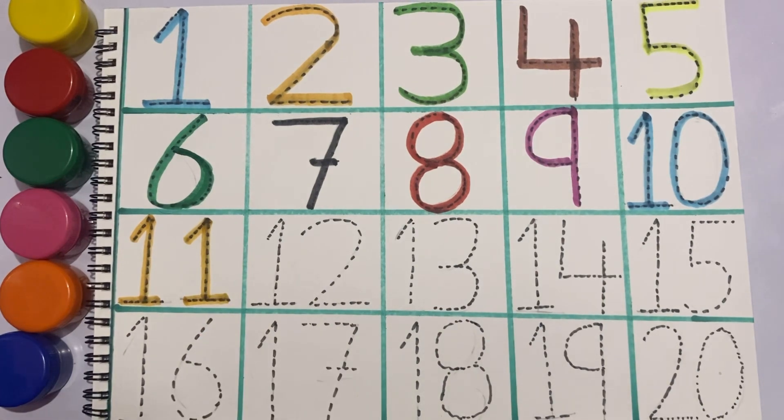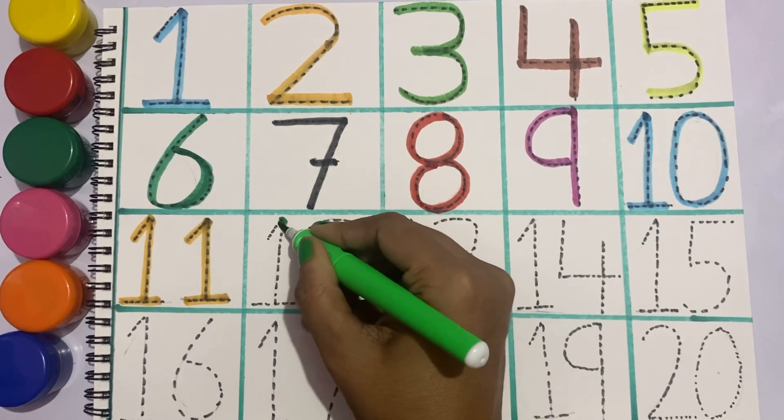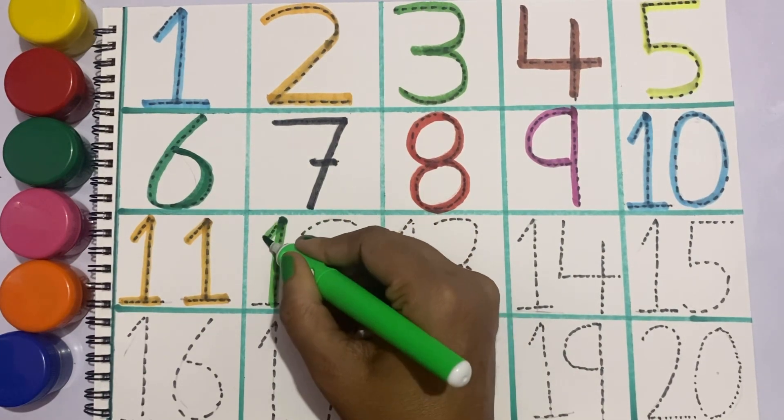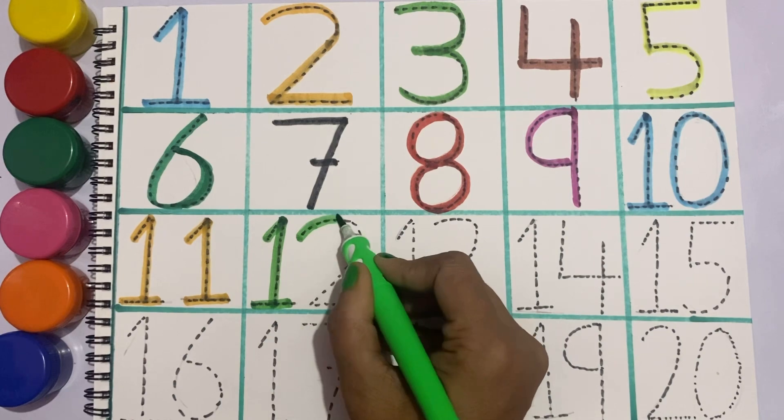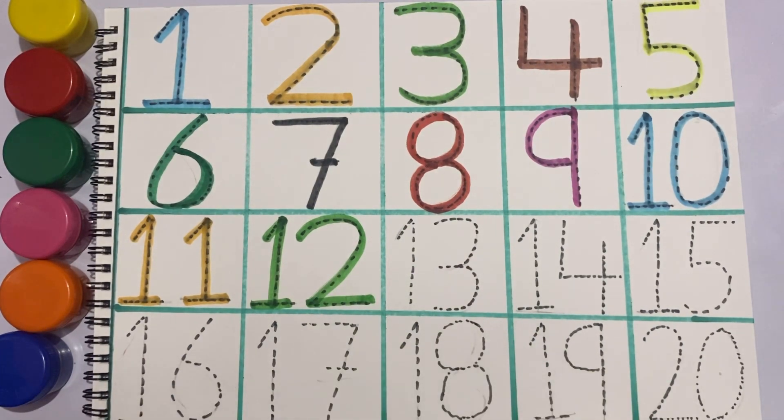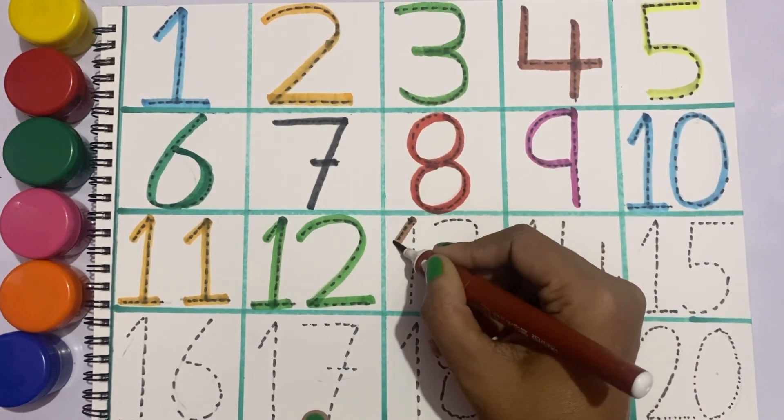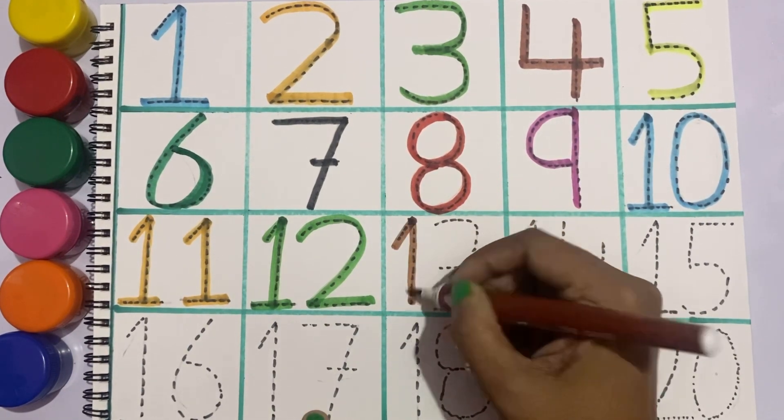One, eleven. Now we'll write twelve with green color, one two, twelve. Now we'll write thirteen with the help of